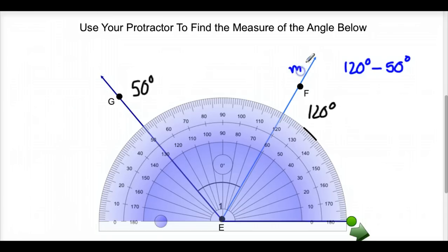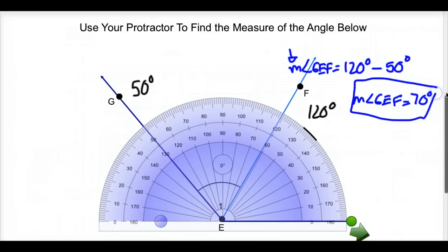That will give me the measure of angle GEF. By the way, this M right there means measure. Don't forget that. So the measure of angle GEF is equal to 120 minus 50, 70 degrees. And that's our measure using a protractor. Just your two angles and subtract.